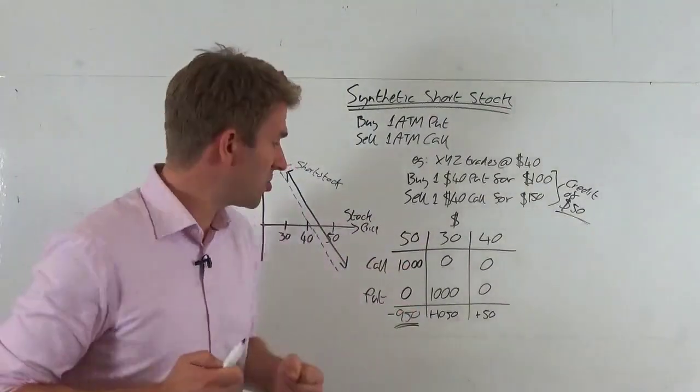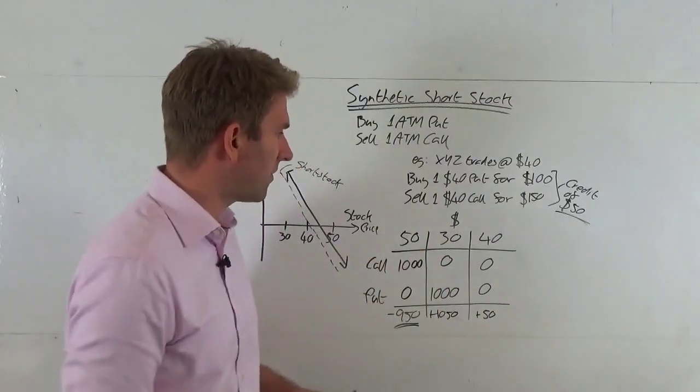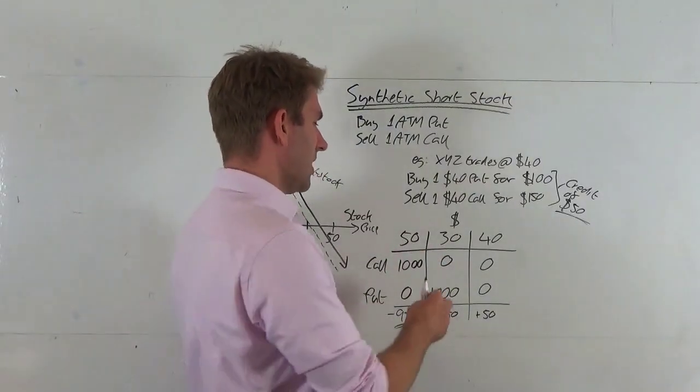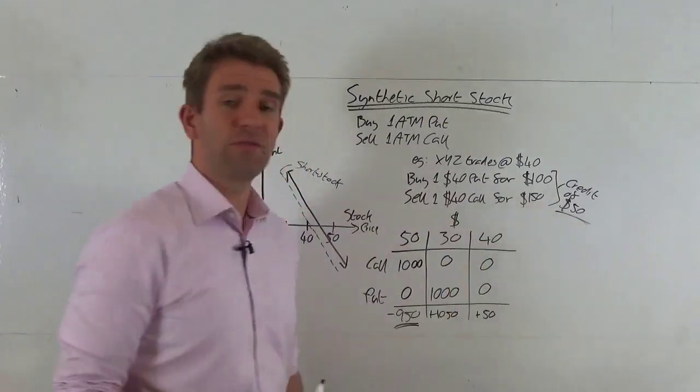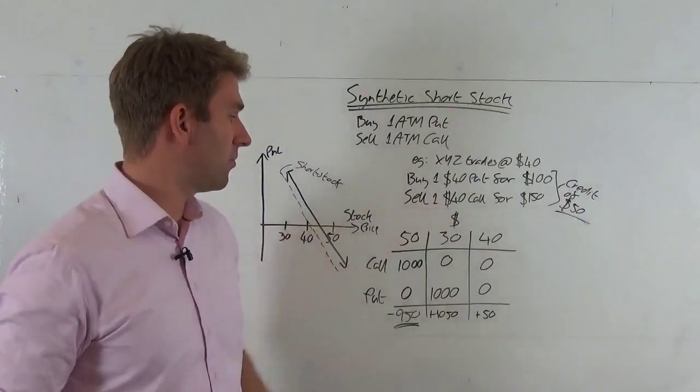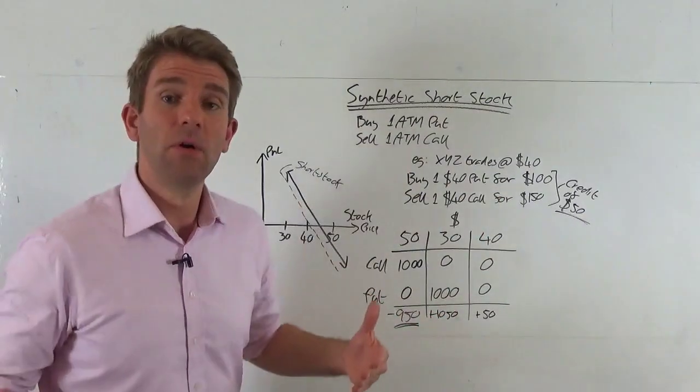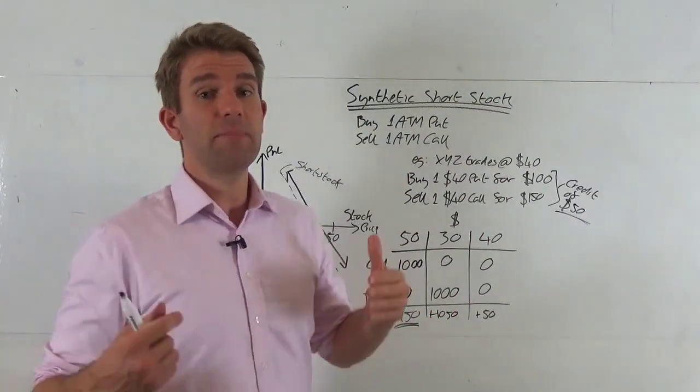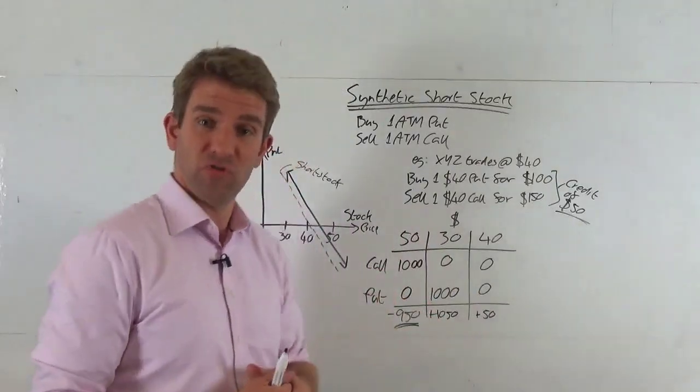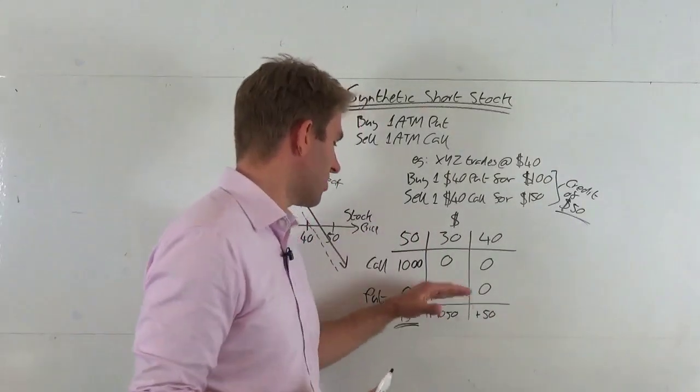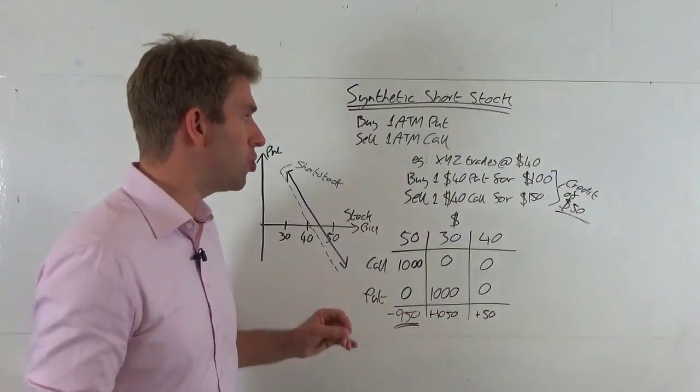What happens at $30? That's good for us because we're synthetically short. The call expires worthless, which is good, because we were shorting that $40 call. What about the $40 put? At a $30 expiry price, that gives us $10 worth of intrinsic value, so that's worth $1000.